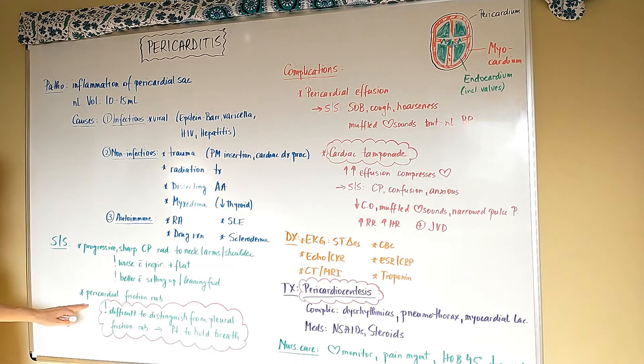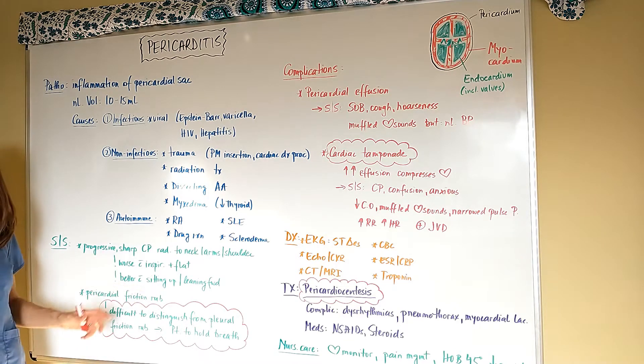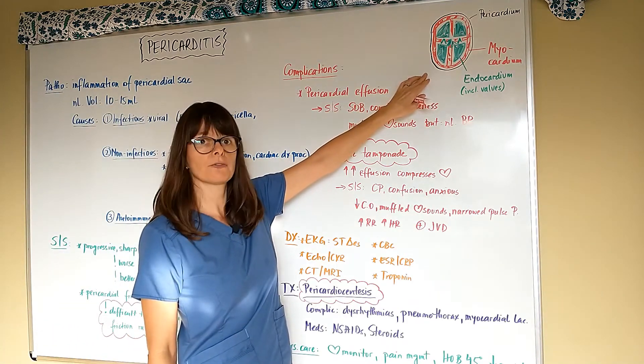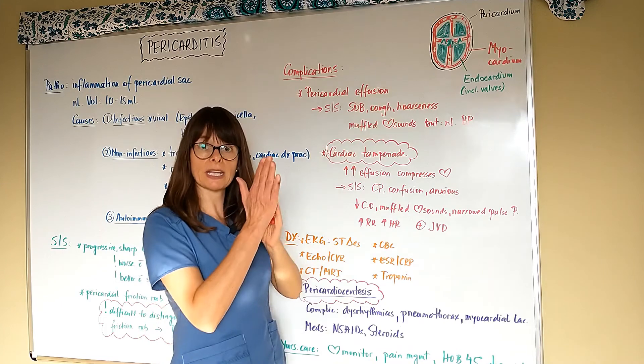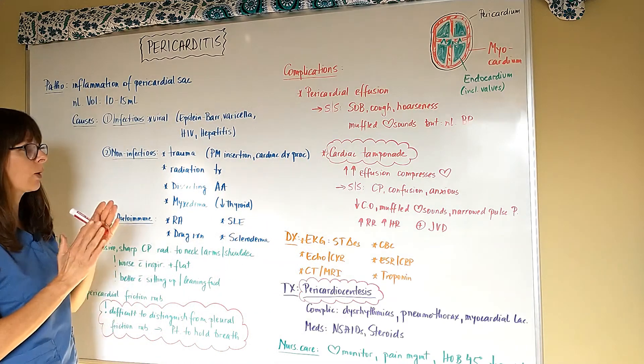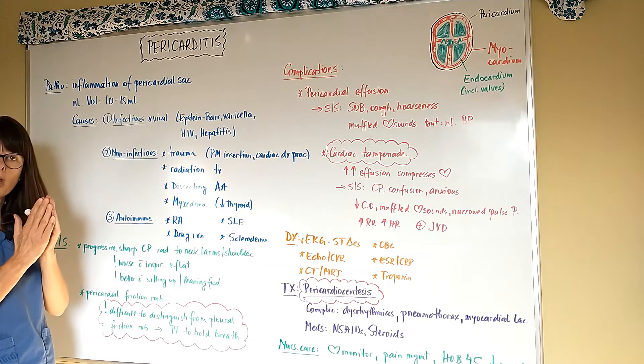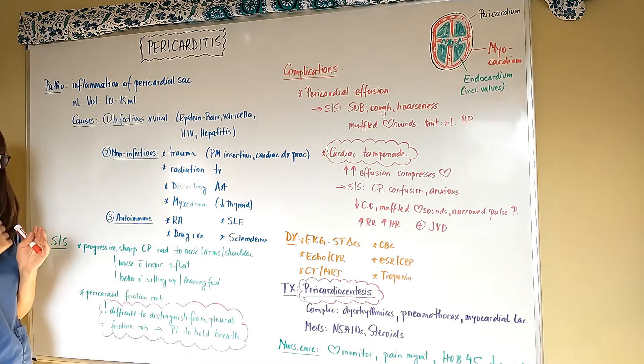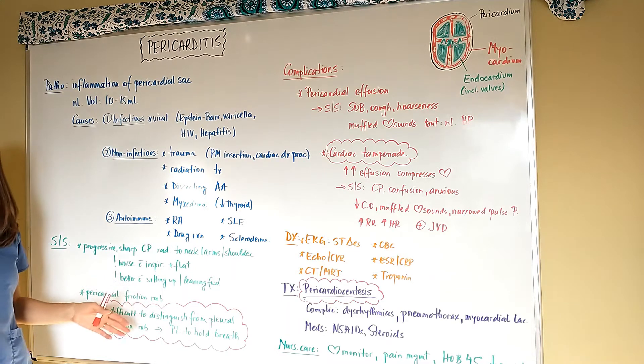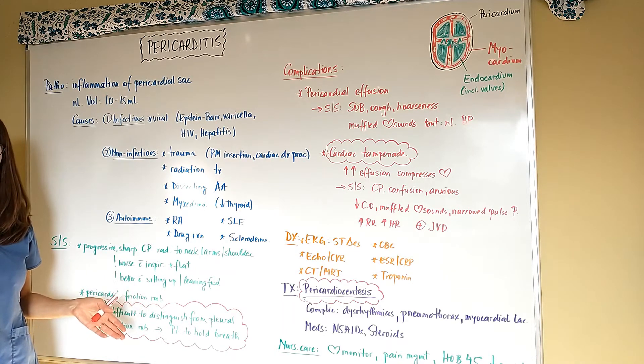And then the patient probably will have a pericardial friction rub. And that, again, is because now we've lost the lubrication fluid because of this inflammation, and now we can hear the myocardium and the pericardium rubbing against each other.